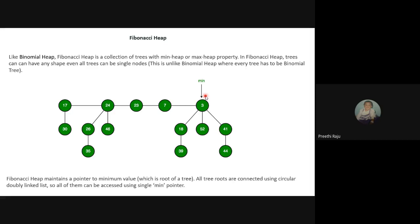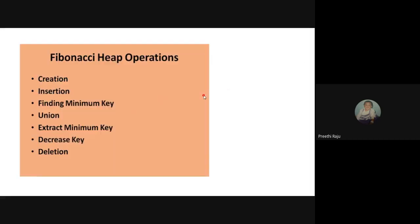Since it uses a circular doubly linked list, only one pointer — the minimum pointer — is needed. New coming nodes can be added as root elements, added in front of the root. In this doubly linked list circular structure, every node can be accessed. The Fibonacci heap always maintains a pointer for the minimum value; in this structure, three is always the root.